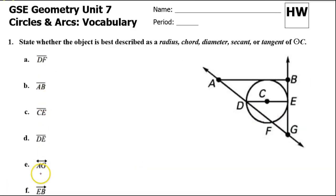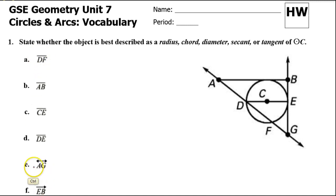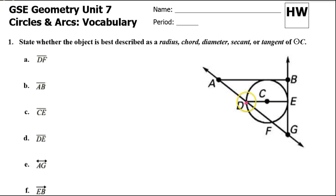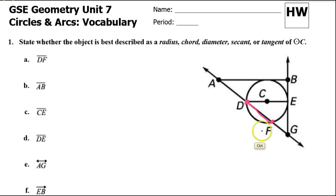Look at each one of these figures and decide if it is best described as a radius, a chord, a diameter, a secant, or a tangent of circle C. The first figure is a chord because it begins and ends on the circle.